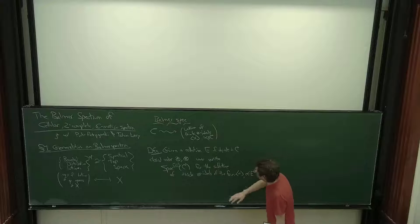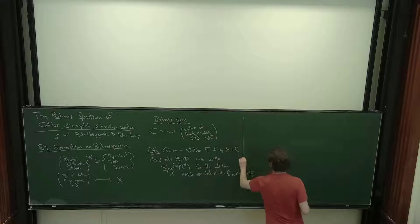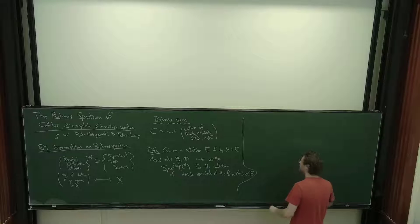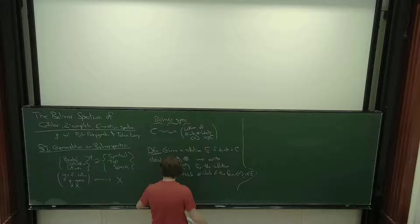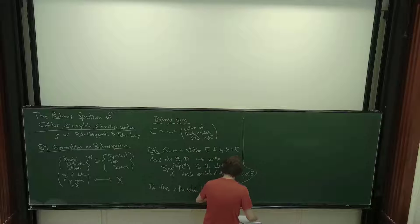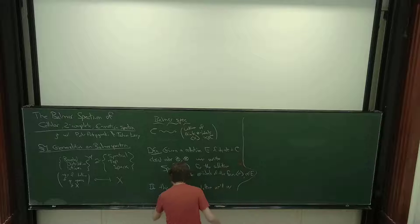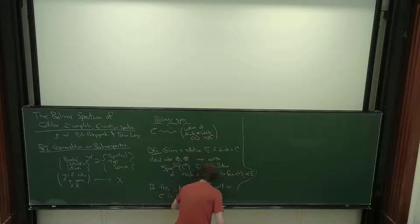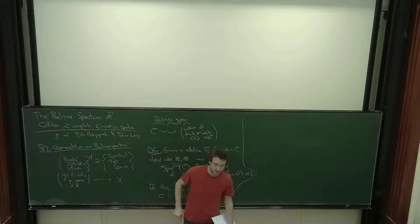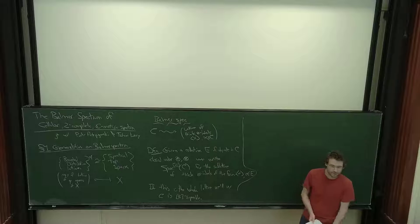Let me write down some sources of things like this and what they lead to. If the sublattice is the whole lattice, we'll say C is E-generated, because the idea is that you're finding that you can separate points in this space using only the objects in E that are easy to reach.